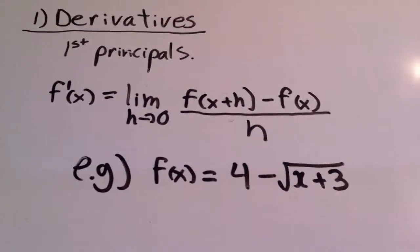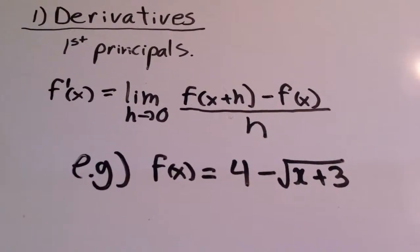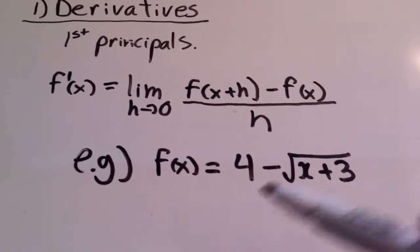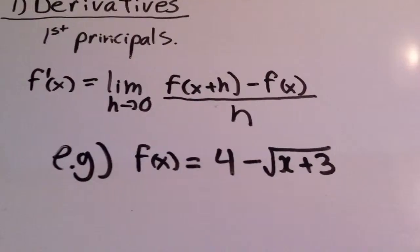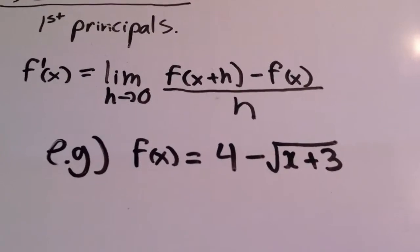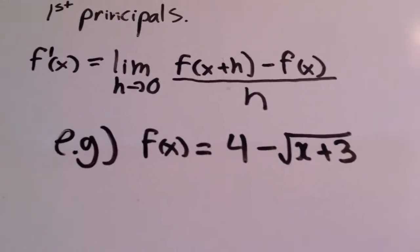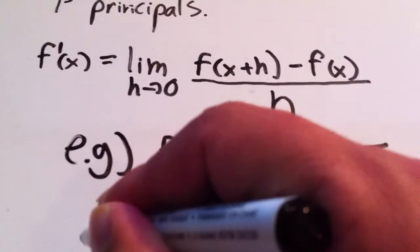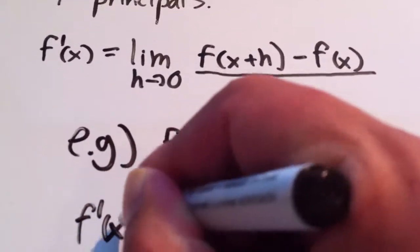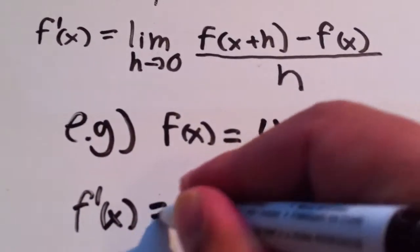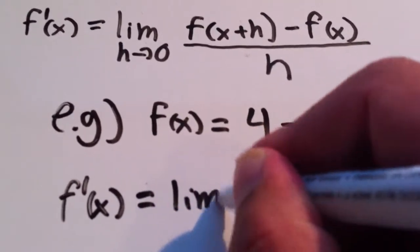So for example, if we have the function f(x) = 4 - √(x+3), the derivative f'(x) would be equal to the limit as h approaches 0 of...